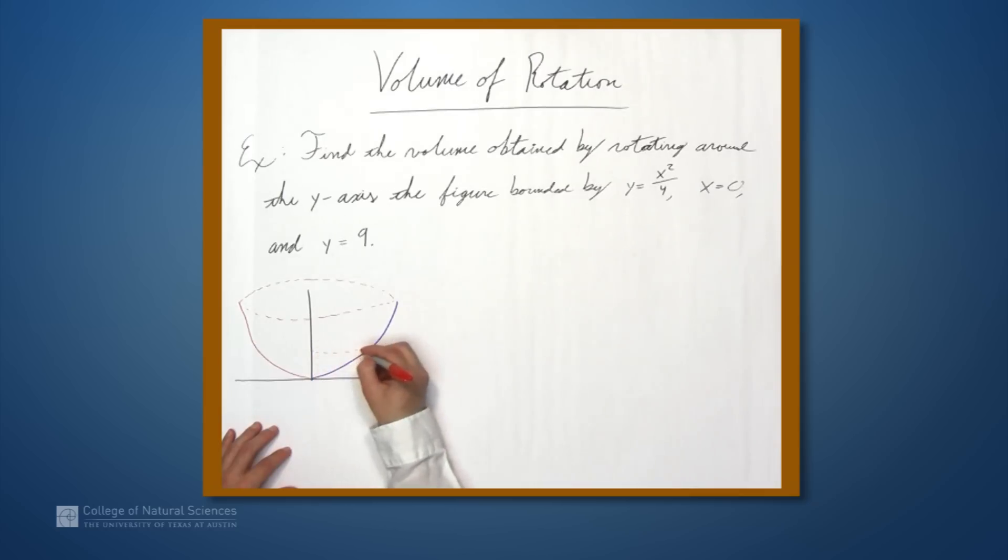So we have some cross-section here, and the area of this thing is a—oh, I shouldn't say a of x. If we're rotating around the y-axis, we're going to need a in terms of y. So we're going to want, in particular, radius in terms of y.